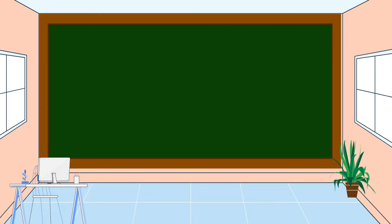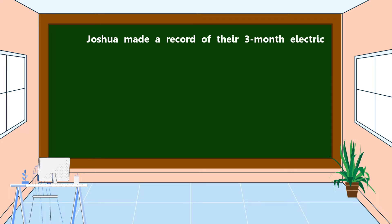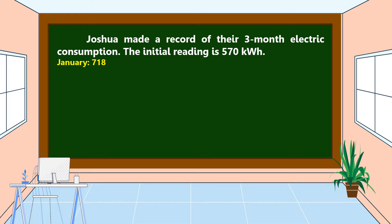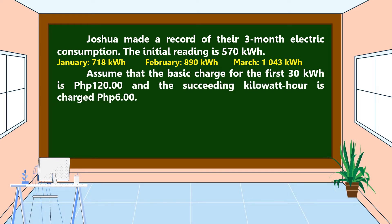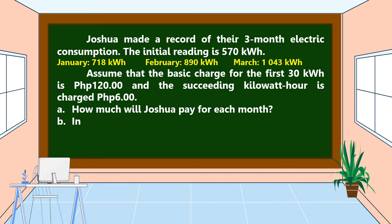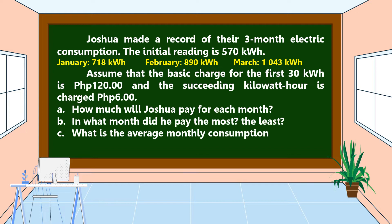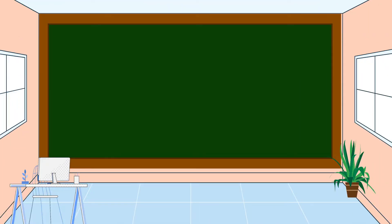This is our first problem. Joshua made a record of three months of electric consumption. The initial reading is 570 kilowatt hours. For January it is 718 kWh, for February it is 890 kWh, and for March it is 1,043 kWh. The basic charge for the first 30 kilowatt hours is 120 pesos, and each succeeding kilowatt hour is charged 6 pesos. Letter A: how much will Joshua pay for each month? Letter B: in what month did he pay the most and the least? Letter C: what is the average monthly consumption?